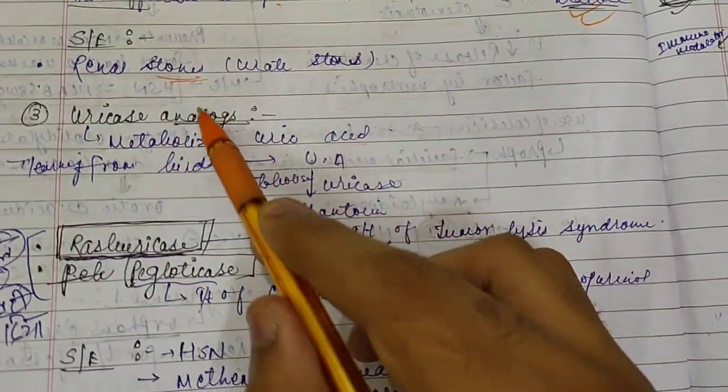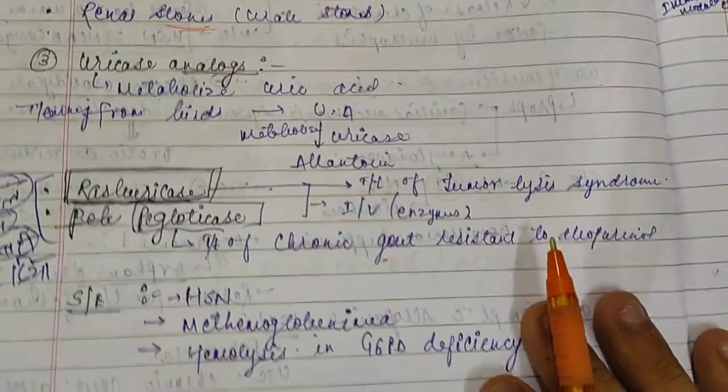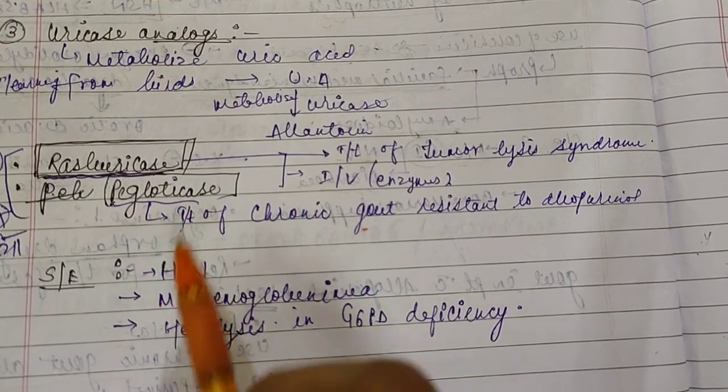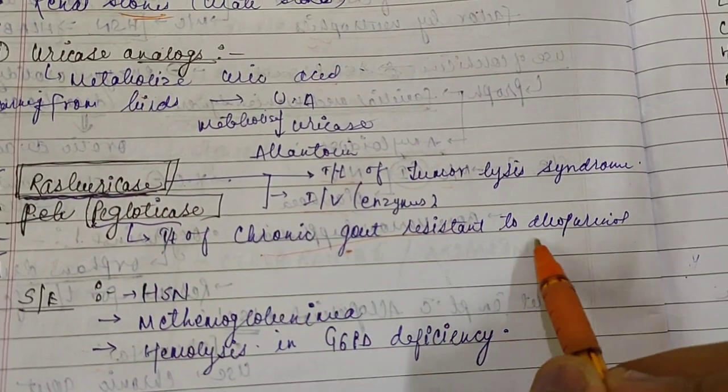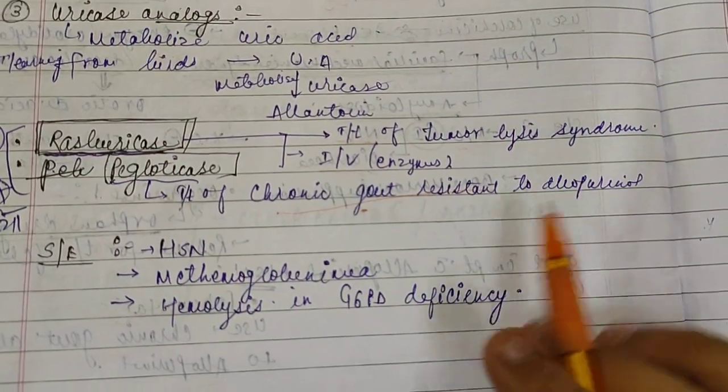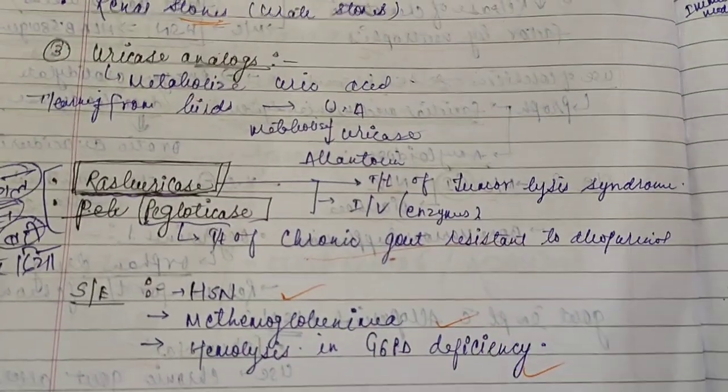Third group is uricase. It just metabolizes uric acid. Two drugs: rasburicase and pegloticase. Pegloticase is used for treatment of chronic gout resistant to allopurinol and this can be given for the treatment of tumor lysis syndrome also. Side effects are hypersensitivity, methemoglobinemia, and hemolysis in G6PD deficiency.